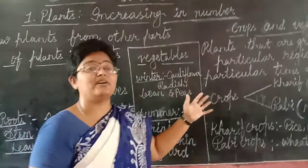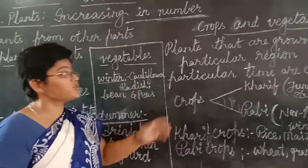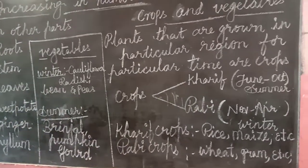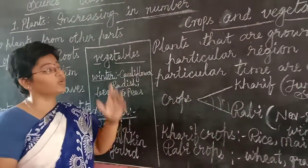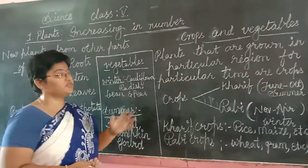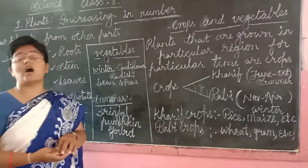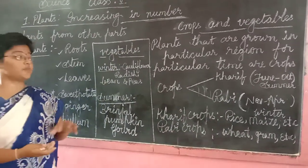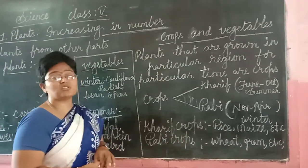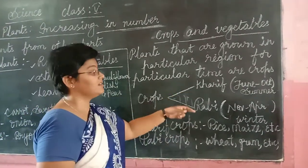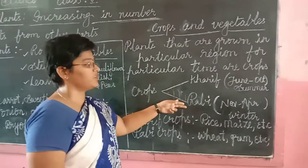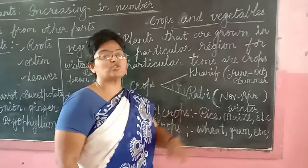We have discussed that there are two types of crops, and we have already seen what crops are. Plants that are grown in a particular region for a particular period of time in a particular place are defined as crops. The two types of crops are Kharif and Rabi. These two types of crops are grown in different months of the season.